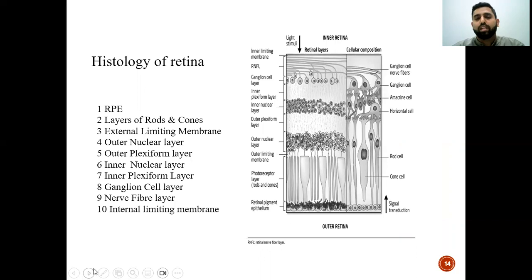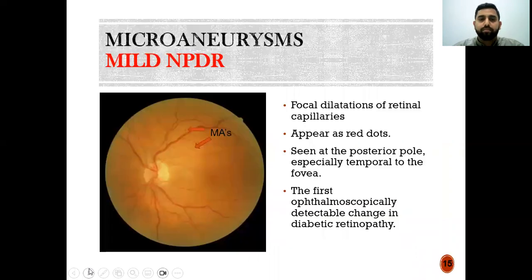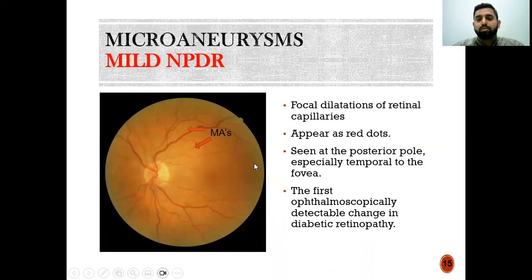When we look into the retina, it is composed of 10 layers, where the damages in diabetes most often happen in the middle layers. Microaneurysms, a sign of mild non-proliferative diabetic retinopathy, can be seen as red dots on the posterior pole, especially in the peripheral area, and this is the first ophthalmoscopically detectable change in diabetic retinopathy.